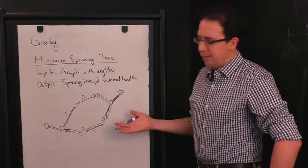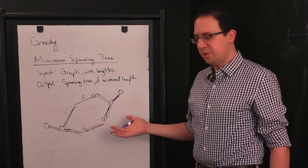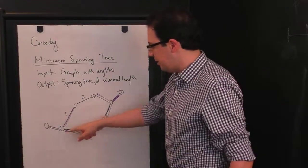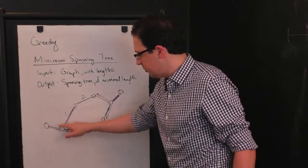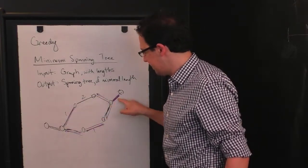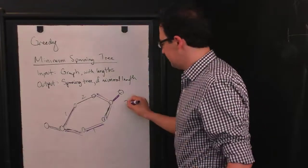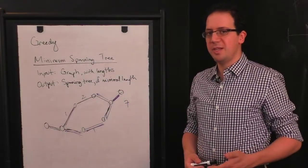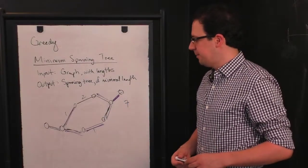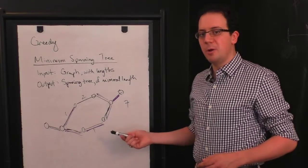And then I claim that this is a minimum spanning tree for this graph. Its weight, we said all of the edges except for this one had weight one. So its weight is one, two, three, four, five, six, seven. Before I prove to you that this actually is a minimum spanning tree, let's analyze how long this algorithm took.